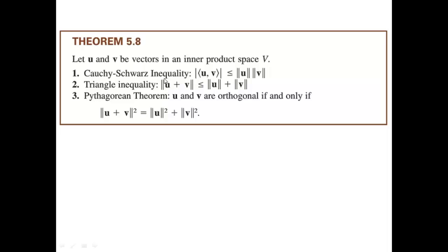Theorem: Let U and V be vectors in an inner product space V. Then: (1) the Cauchy-Schwarz inequality states |⟨U, V⟩| ≤ ‖U‖·‖V‖; (2) the Triangle inequality states ‖U + V‖ ≤ ‖U‖ + ‖V‖; and (3) the Pythagorean theorem states U and V are orthogonal if and only if ‖U + V‖² = ‖U‖² + ‖V‖². These are very close to what we saw in Lecture 24, except here we use the more generalized inner product rather than just the dot product. Beautiful concepts — thank you very much.